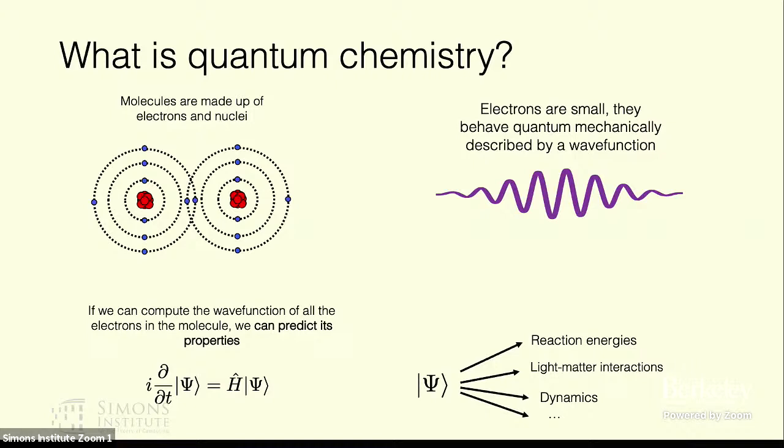The really basic picture of course is that we have molecules that are made up of electrons and nuclei. Electrons are small and they behave quantum mechanically and we can describe them with a wave function. Ideally if we want to compute the wave function of all the electrons in some system, then we can compute properties that are of interest to us.